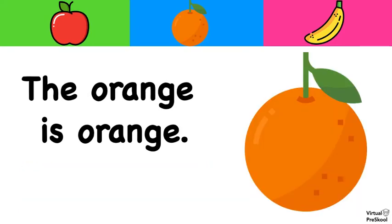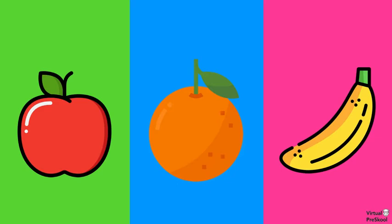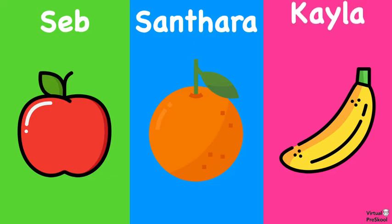What about this one? The orange is orange. This is kind of a funny sentence. So this one would be santara narangi hai. This is something unique in Hindi compared to English. In English, we just have one word for orange - the color and the fruit. But in Hindi, we have two separate words: the fruit is santara and the color is narangi. So the sentence would be santara narangi hai. Let's review these words one more time. Apple is seib. Orange is santara. And banana is kela.